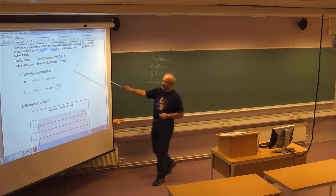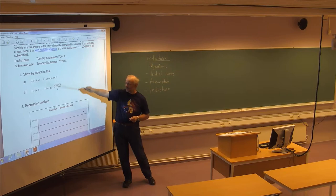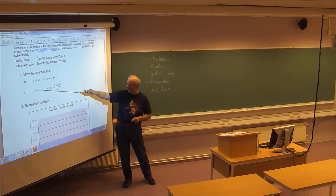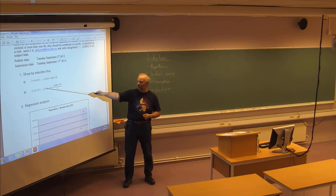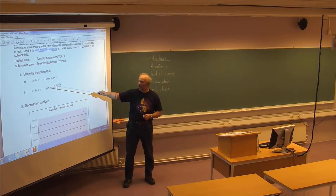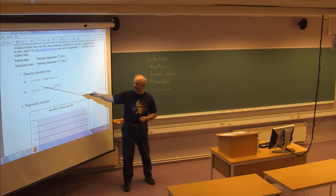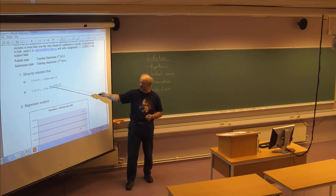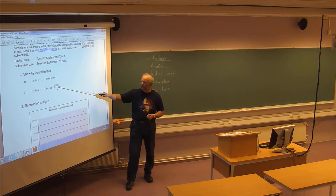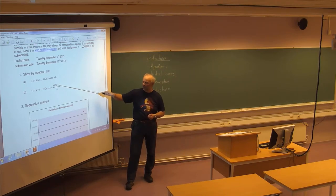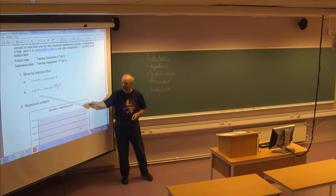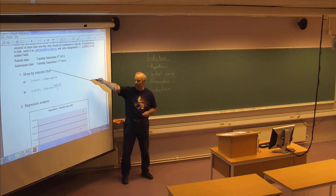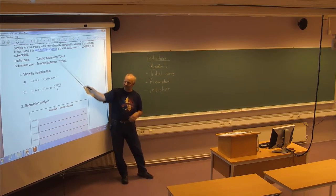The second induction problem is a bit more complex. The series is 1 + 4 + 7 + 10 + ..., where the general term is 3n minus 2. The sum of this series should equal n multiplied by (3n minus 1) divided by 2. These are the two induction problems you should solve in this assignment.